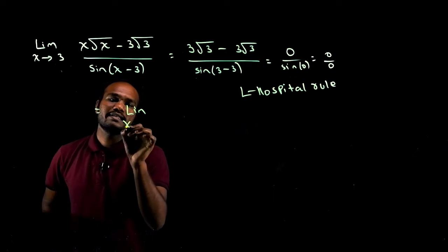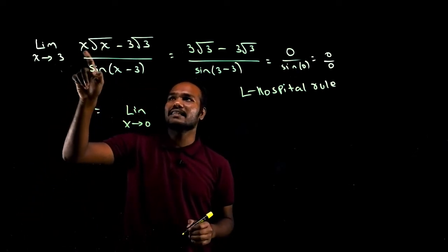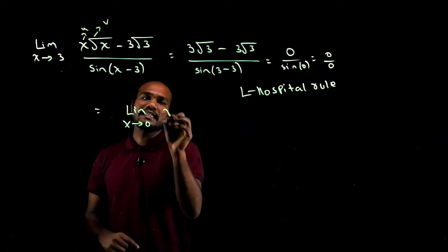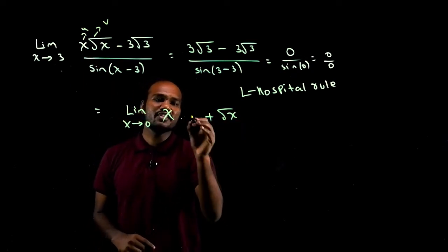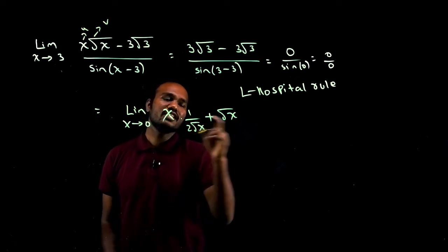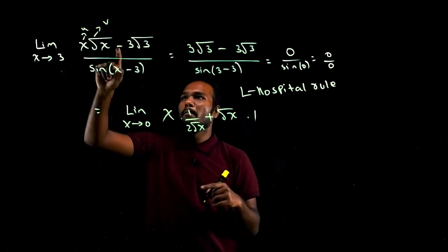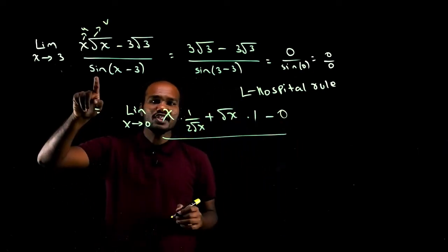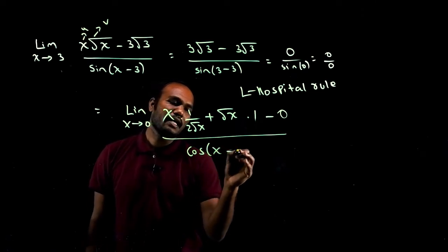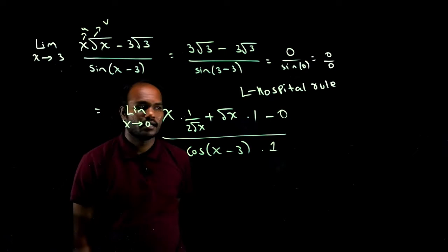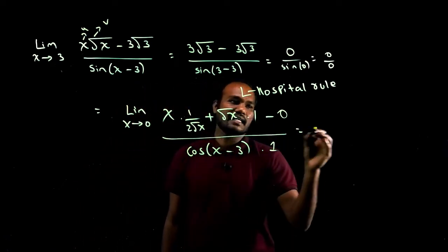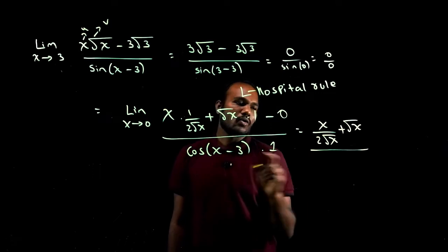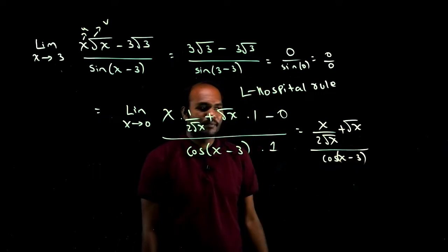So let's differentiate. Limit x tends to 3. In the numerator we have x√x — there are two variables, so we use the UV rule. This is u and this is v. So: x times (1/2√x) plus √x times 1. That gives x divided by 2√x plus √x. Minus 3√3, which is a constant, differentiates to 0. In the denominator, sine differentiates to cos(x minus 3) times 1.